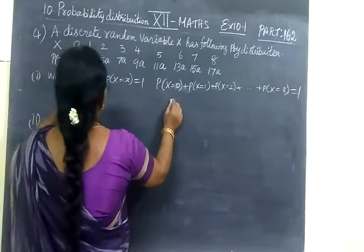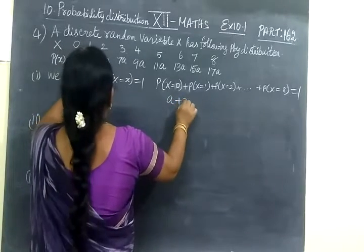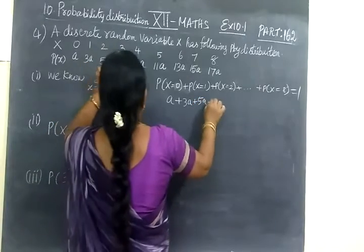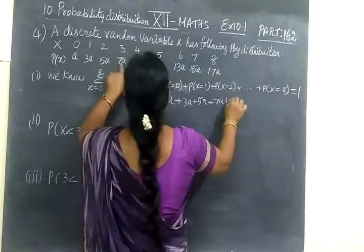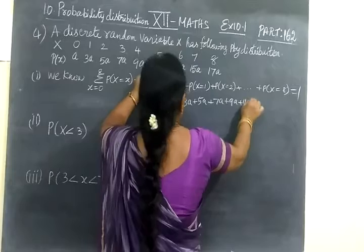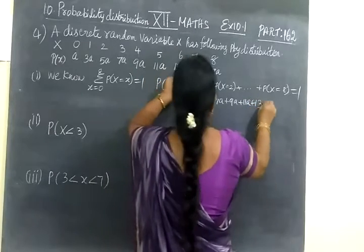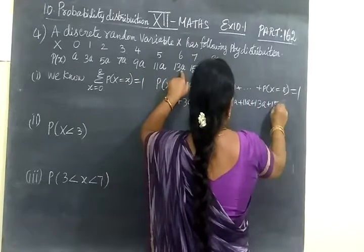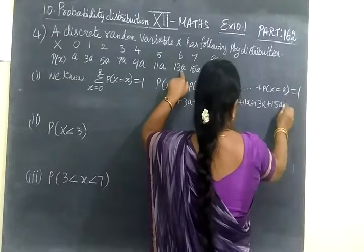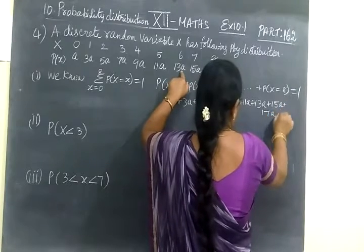So you write all these values. A plus 3A, 5A, 7A, 9A, here 11A, then 13A, then 15A plus 17A.